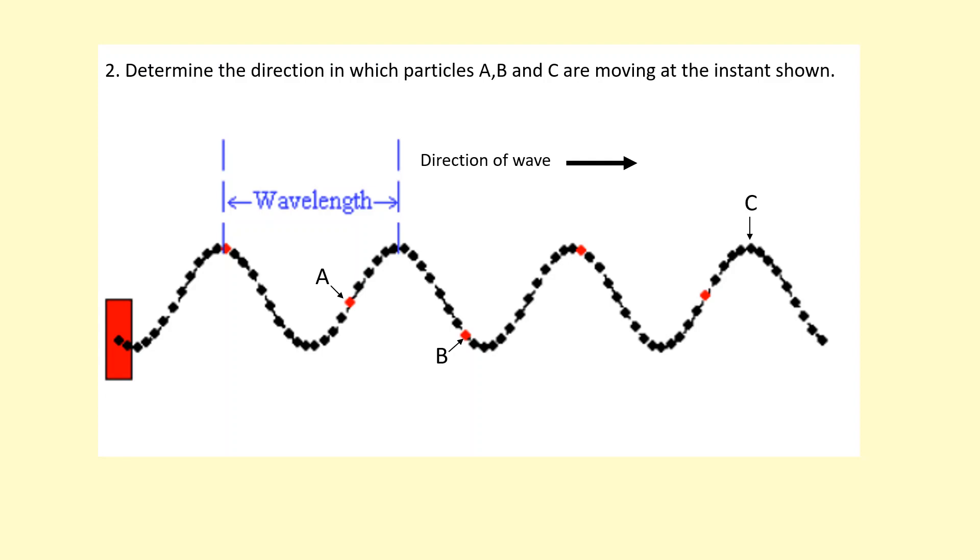certain particles in the wave are moving. In this question you're asked to determine which direction A, B, and C are moving in. I know the wave is moving towards the right, so what I'm going to do is trace the wave a fraction of a second after this point shown in the diagram. I'm going to trace it like this, ever so slightly to the right.